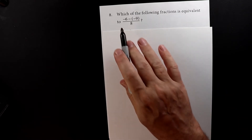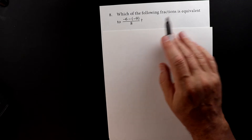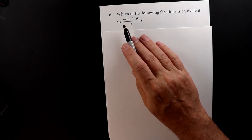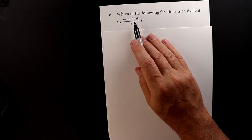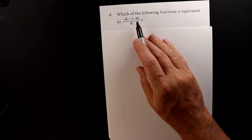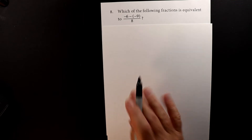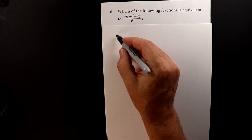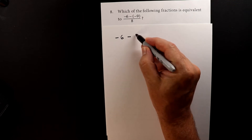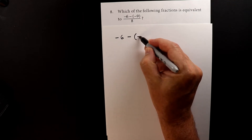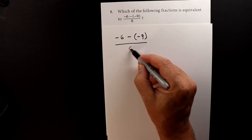This is number 8 of the second test. Which of the following fractions is equivalent to negative 6 minus a minus 9 over 8? So let's rewrite this and take it apart. We start off with the numerator: negative 6 minus a minus 9 over 8.